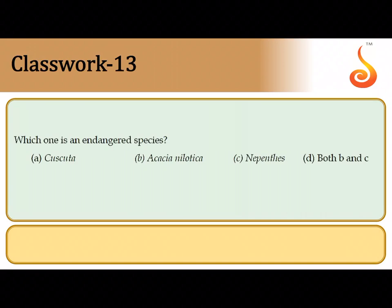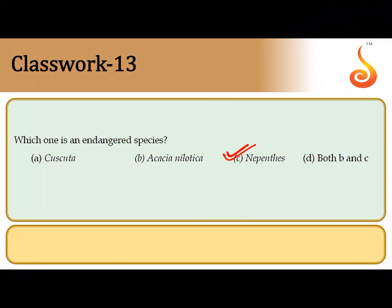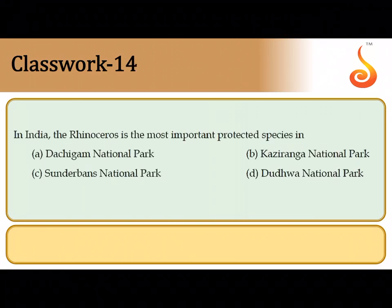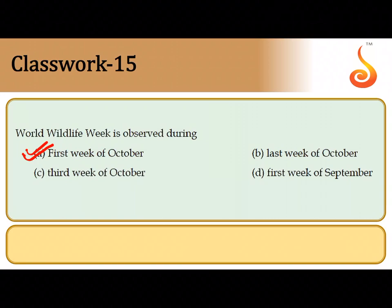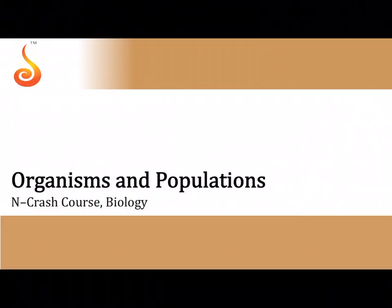The thirteenth question asks which is an endangered species. Among the options, the insectivorous pitcher plant Nepenthes khasiana, found in the northeastern Himalayas, is the endangered species. The fourteenth question: Rhinoceros unicornis, the one-horned rhinoceros, is protected in Kaziranga National Park of Assam — correct answer is the second option. World Wildlife Week is observed during the first week of October, while World Wildlife Day is on March 3rd. So the correct answer is option A.